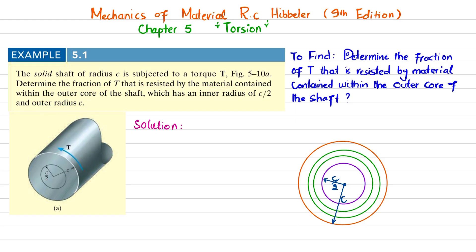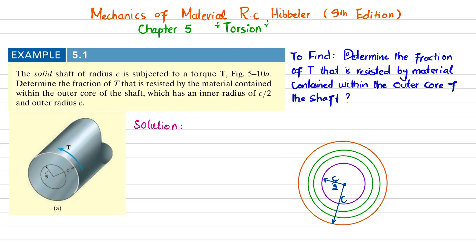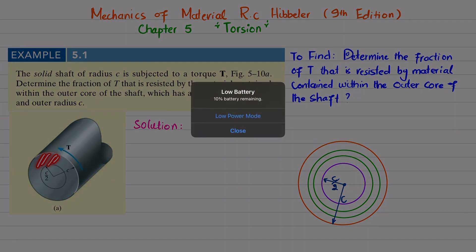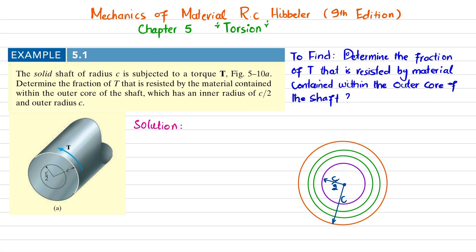The solid shaft is made up of an outer core and an inner core having radius c/2. The torque T is applied to the shaft, and we have to find the fraction of torque that is resisted by this outer core.